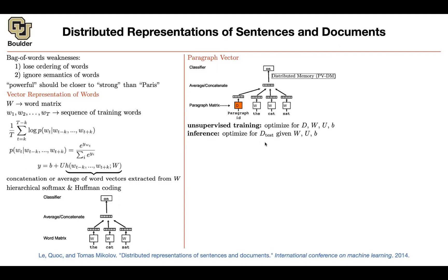You need to first compute D_test through a bit of training for each new paragraph in your test data. But once you know D, the rest is easy: you do logistic regression or a support vector machine on D for classification. Once you have a vector, everything is back to classical machine learning — that's why you go through all this trouble to transform text into a vector.